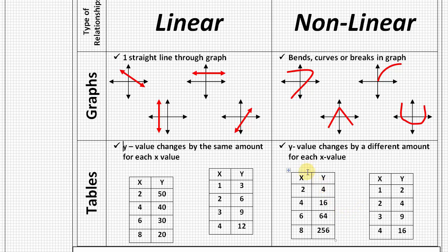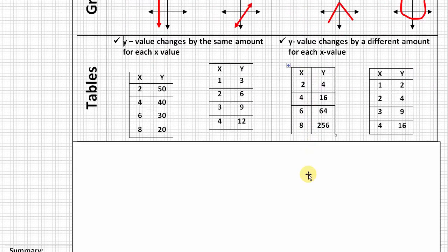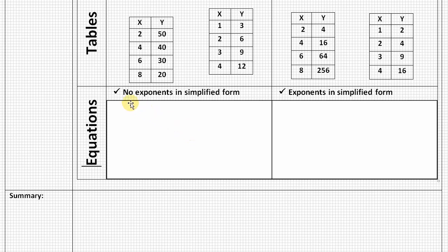Let's take a look at our final view, looking at equations. So in equations, we want to look at their most simplified form, and if it's linear, there will not be any exponents in its most simplified form. Whereas for nonlinear, there will be exponents, and so let's take a look at just a few examples.